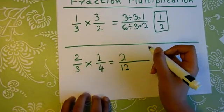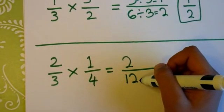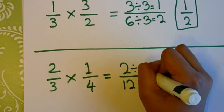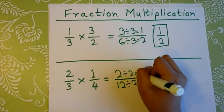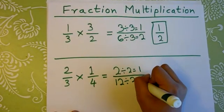You could simplify this because both the numerator and the denominator are multiples of 2. So, 2 divided by 2, and 12 divided by 2. 2 divided by 2 equals 1, and 12 divided by 2 equals 6.